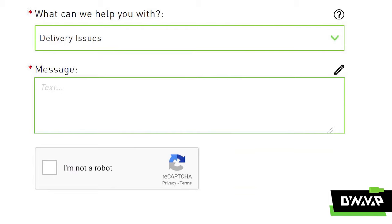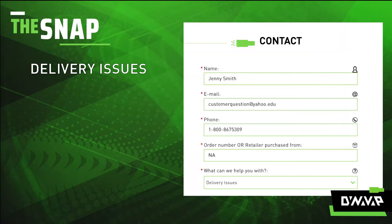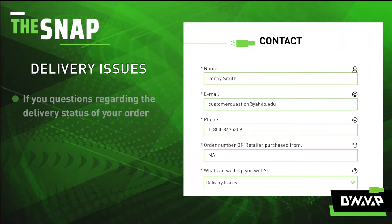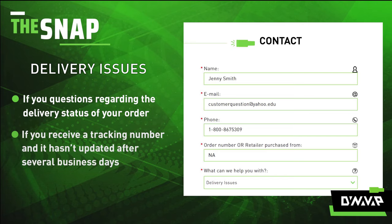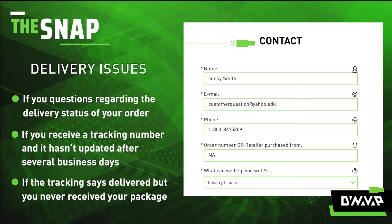"Delivery issues." Please select this option if you have questions regarding the delivery status of your order. For example, if you receive a tracking number and it hasn't updated after several business days, or if the tracking says delivered and you never received your package, select this option.